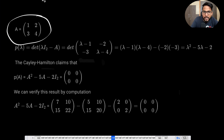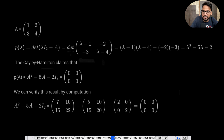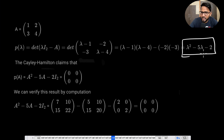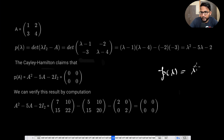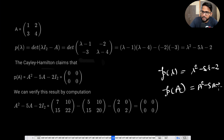Suppose you have a matrix A and you write det(A - lambda*I) = 0 and you get a characteristic equation. Now the matrix also satisfies the same characteristic equation — instead of lambda, just replace with A. So if rho(lambda) = lambda^2 - 5*lambda - 2, then rho(A) = A^2 - 5A - 2I, and this should also be zero.